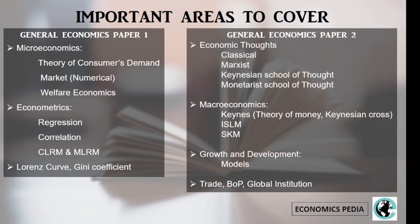Moving to General Economics Paper 2, starting with economic thoughts — a large segment covering Classicals, Marxists, Keynesian School of Thoughts, and Monetary School of Thoughts. From the macroeconomics section, focus on Keynes, IS-LM, and SKM. You can also include the theory of money, covering not only the Keynesian theory but also the Classicals and Monetarists, focusing on how they counter-analyze other theories.